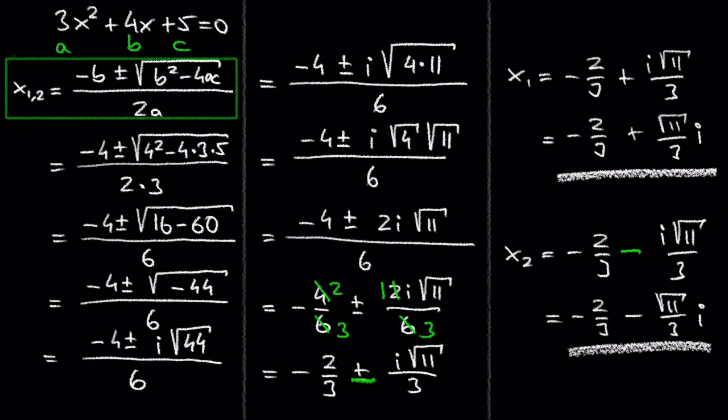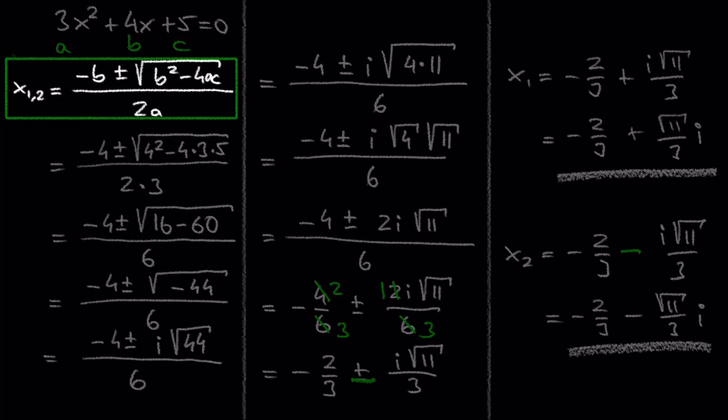And we are done with this problem. Let's do one more example for the sake of practice — I really encourage you to pause the video and try this on your own. The equation is negative 4x squared plus 5x minus 3 equals 0.